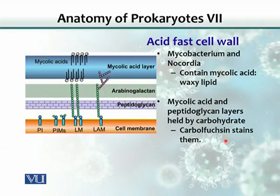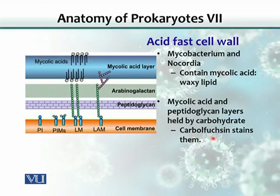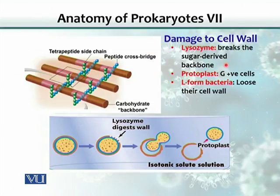Carbolfuchsin is the stain used if we want to stain Mycobacterium and Nocardia. It is very hard to stain them with gram staining, although you could use gram staining. There is a special stain called carbolfuchsin which is mostly used to stain Mycobacterium and Nocardia.